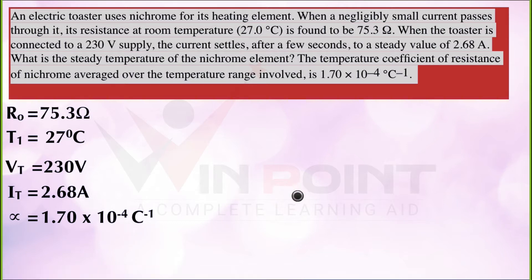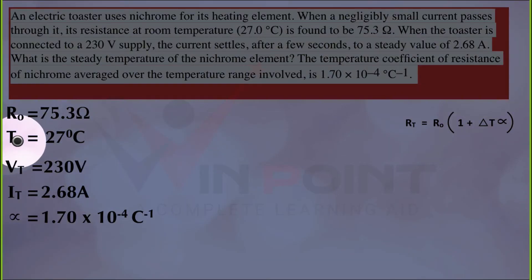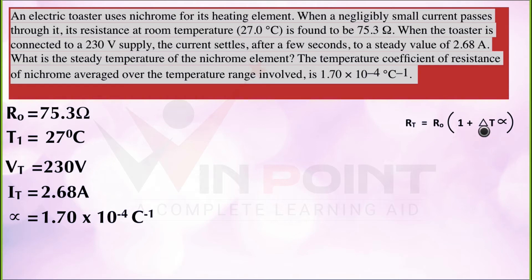We have one equation discussed in the last class: Rt = R₀(1 + αΔT). Here, Rt is the resistance at a particular temperature, R₀ is the original resistance, ΔT is the change in temperature, and alpha is the temperature coefficient of resistance. We need to find the new steady temperature T₂. The initial temperature T₁ is given as 27°C, so we need to find T₂ by making an equation for ΔT.